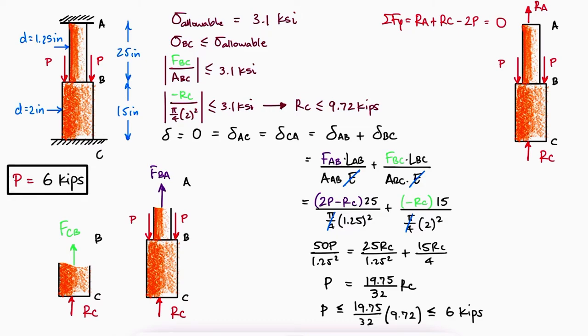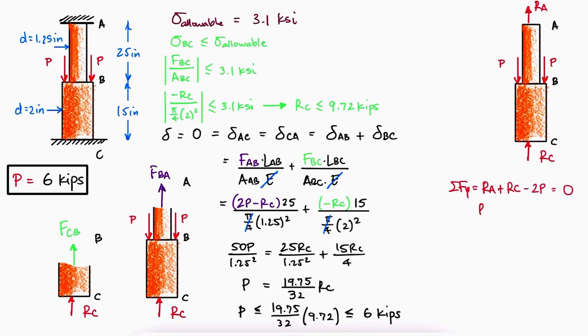But we have yet to make sure that section AB also doesn't exceed the maximum allowable normal stress. From the equilibrium equation, we find that for a value of P equal to 6 kips, the reaction force at A is 2.28 kips.